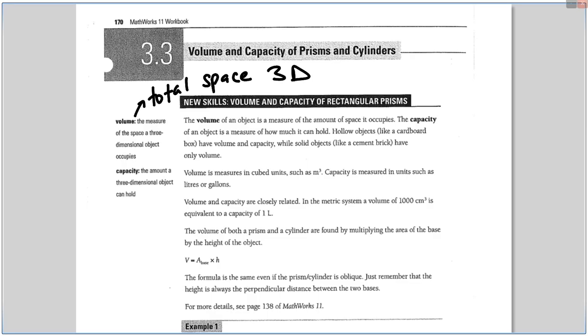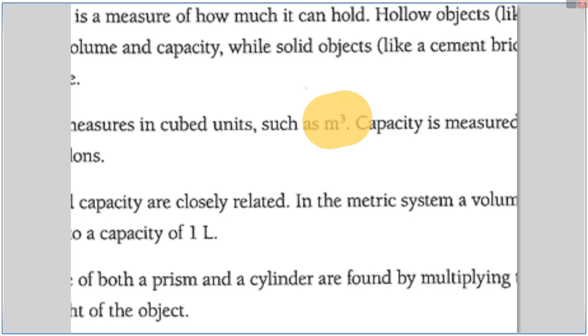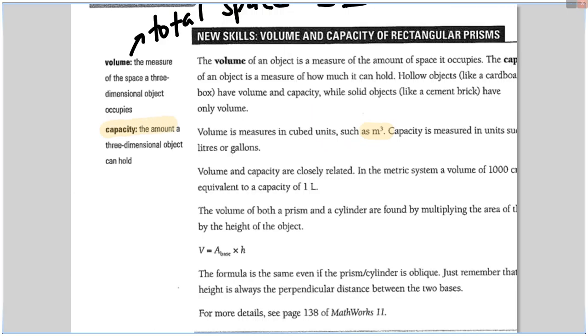It's like how much liquid can fit, how much air can fit in a container. Volume is measured in cubed units, so when you write your units, make sure you put a little 3. Volume and capacity are closely related. Capacity is the amount a three-dimensional object can hold. Volume is the measure of the space a three-dimensional object occupies. Usually we use the word capacity when we're talking about how much liquid a container can hold.